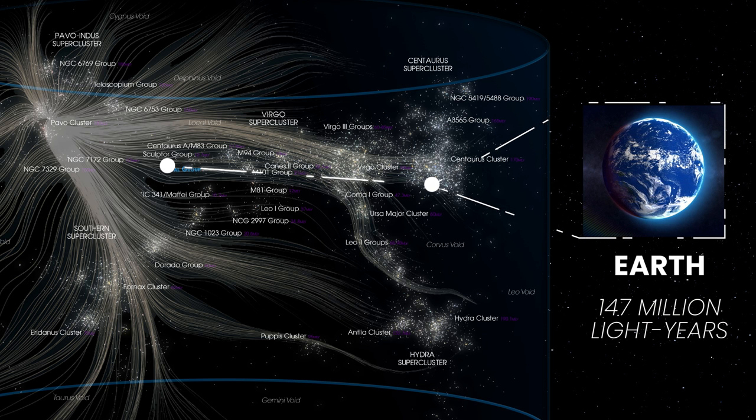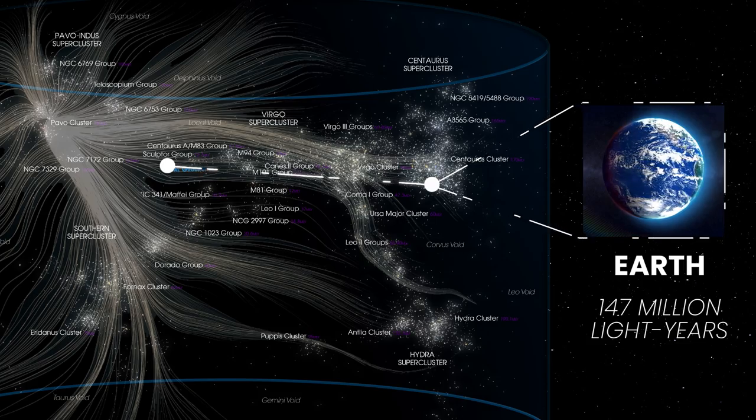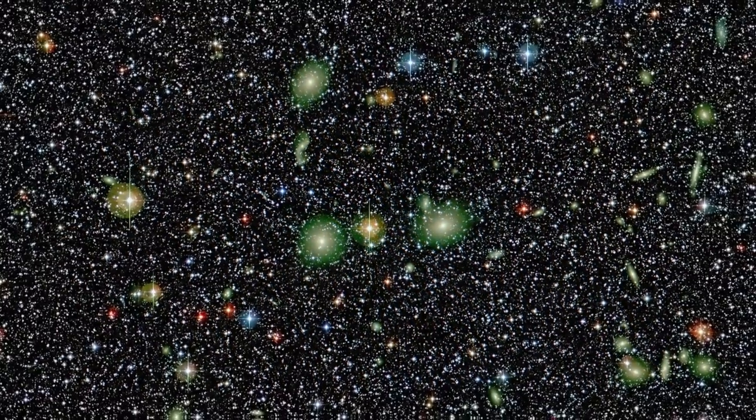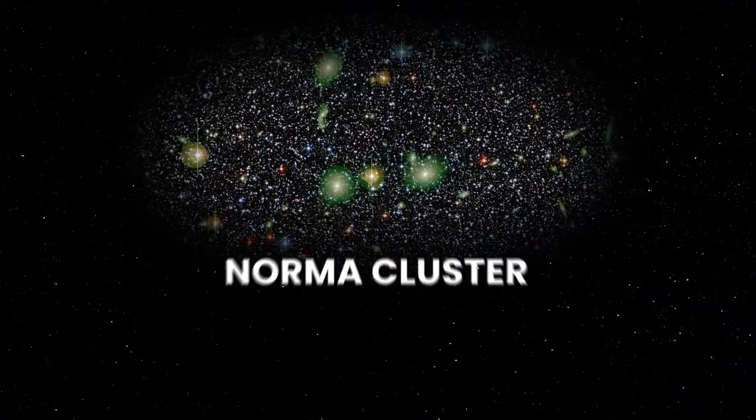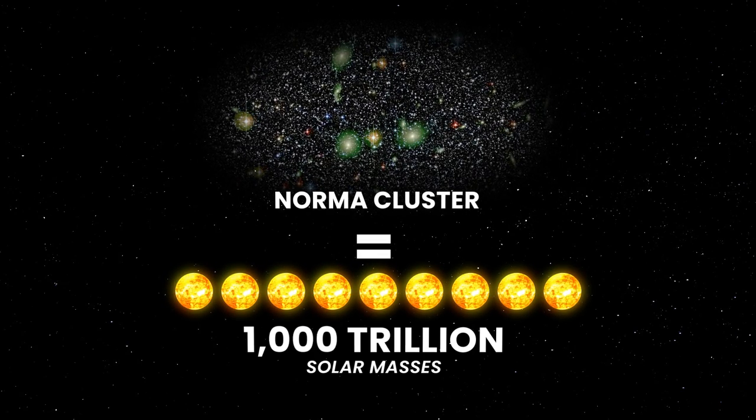In this area, behind the cloud of gas and dust, scientists found a large supercluster of galaxies, now known as the Norma Cluster. Its total mass is estimated to be about 1,000 trillion solar masses.